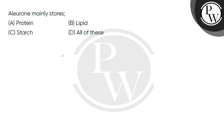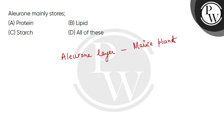So, what is the Aleurone layer? Where do you see the Aleurone layer? You see it in maize — the maize plant or maize seed. This is the endosperm, and the Aleurone layer is present here.